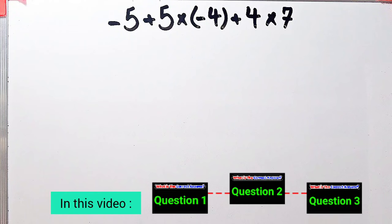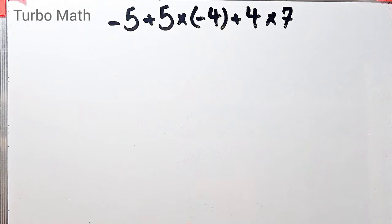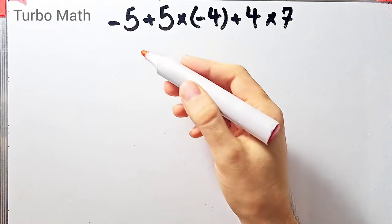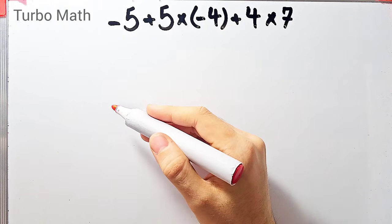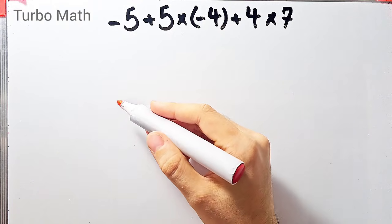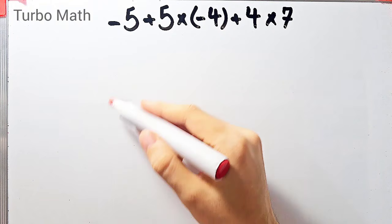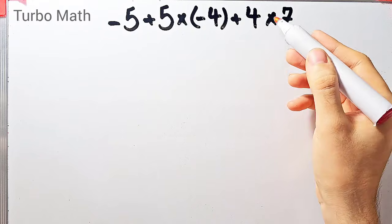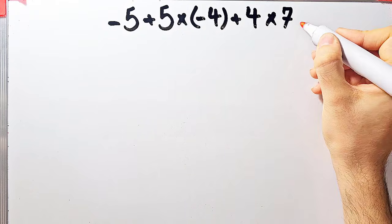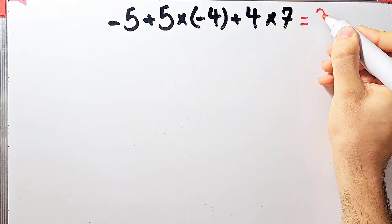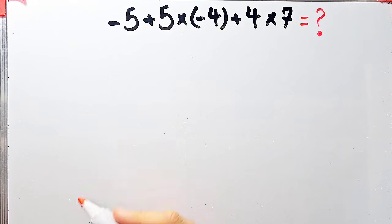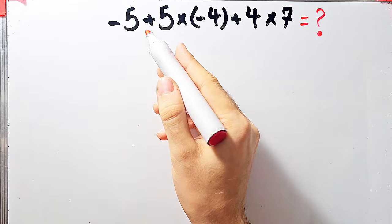Hi friends, welcome to Turbo Math channel. In this video we are going to solve three questions about the PEMDAS rule. In the first question we have: negative 5 plus 5 times negative 4 plus 4, then times 7. What is the answer of this question? In this question we have addition and multiplication.